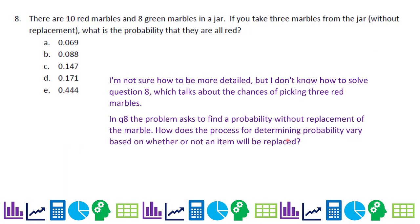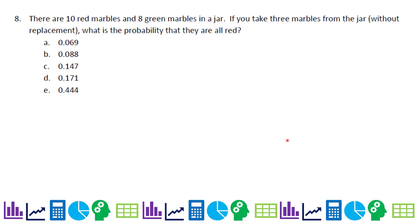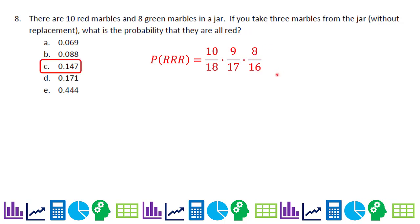Number eight: there are 10 red marbles and 8 green marbles in a jar. If you take three marbles without replacement, what is the probability they are all red? This is a compound events probability. The probability the first marble is red is 10/18. If the first was red, then 9 red remain out of 17. Then 8 out of 16. Multiplying these together gives 0.147.